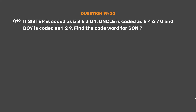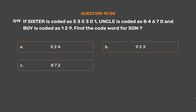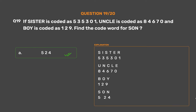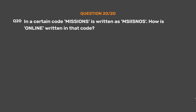Question number 19: If 'sister' is coded as 535301, 'uncle' is coded as 84670, and 'boy' is coded as 129, find the code word for 'son'. Option A: 524. Option B: 923. The correct answer is Option A: 524. S=5, O=2 (from uncle/boy), N=4.